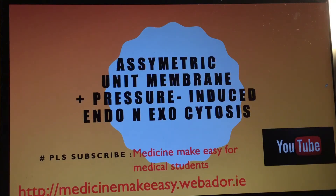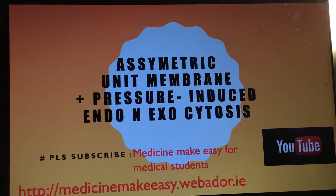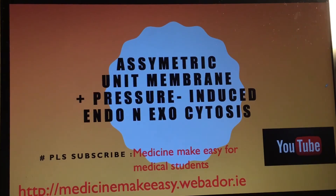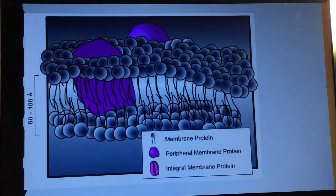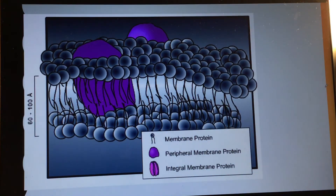In this video I'm going to talk about asymmetric unit membrane and pressure-induced endocytosis and exocytosis in the urothelium of your urinary bladder. Before that, please subscribe to Medicines Made Easy for medical students on YouTube and visit the blog to get the slides or notes. I would like to introduce the difference between the outer leaflets and the inner leaflets.